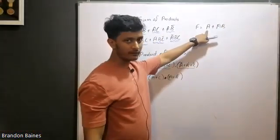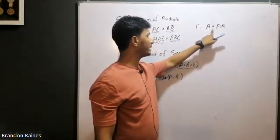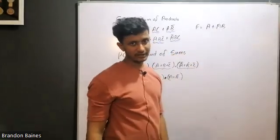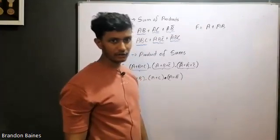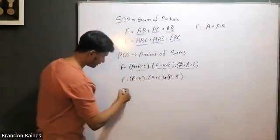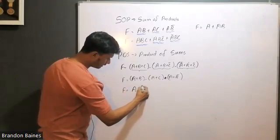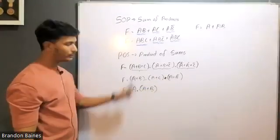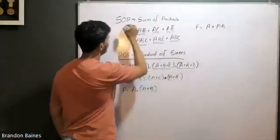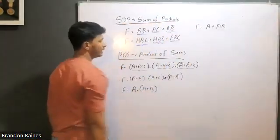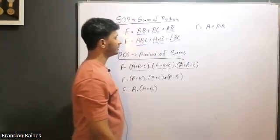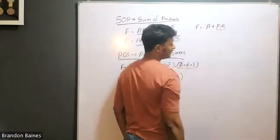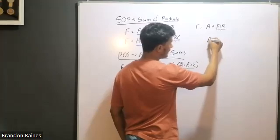F equals A plus AB. That's the Sum of Products form. If you have a Sum of Products, you will have a Sum of Products. This is the Sum of Products, and that's the Sum of Products of sums. If you have a subterm, you can use a term for one variable.